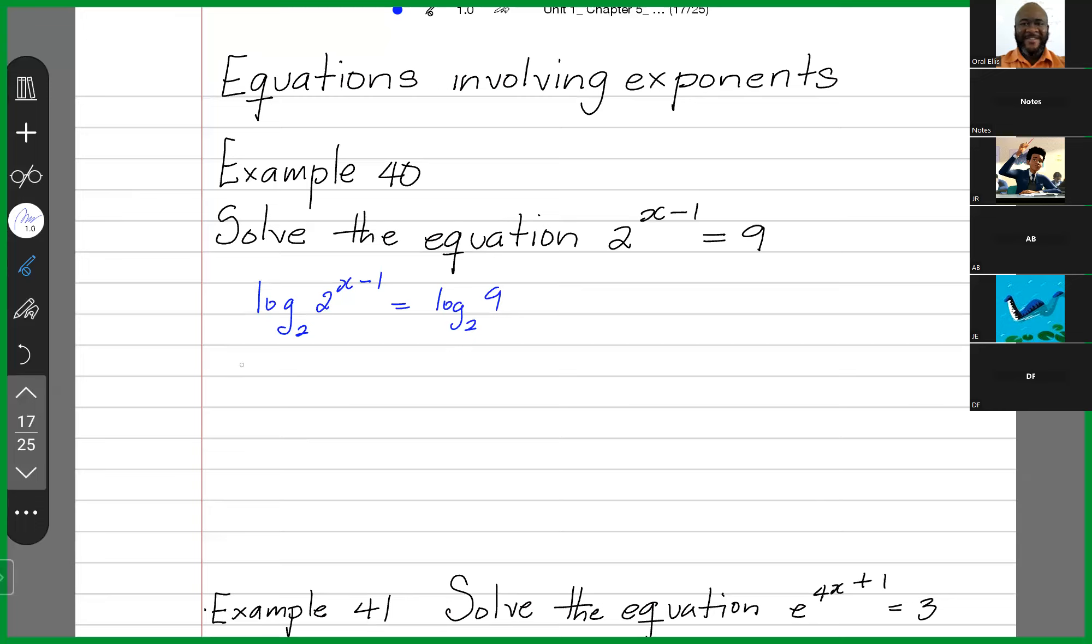Using my law of logarithms, I'm going to bring the power to the front. x minus 1 multiplied by log to the base 2 of 2 is equal to log to the base 2 of 9. Log to the base 2 of 2 is 1. So what we have now is 1 multiplied by x minus 1, which essentially gives you x minus 1 is equal to log to the base 2 of 9.